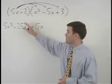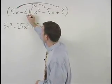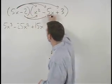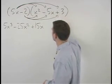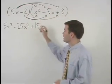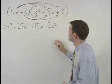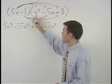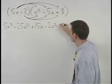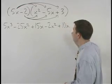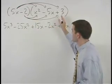Next we would distribute the negative 2 through all three terms inside the parentheses to get negative 2x squared plus 10x minus 6.